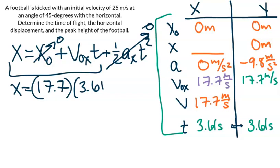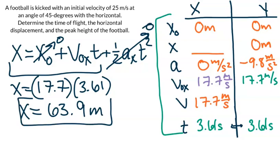So 17.7 times 3.61 gives us a final position of 63.9 meters, which will be our horizontal displacement.